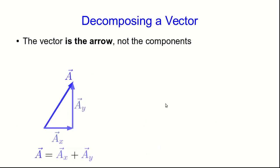You may have already learned how to write down a vector in terms of its components and that's good and we'll look at that in a moment. But remember the vector is not its components. The vector is the arrow.